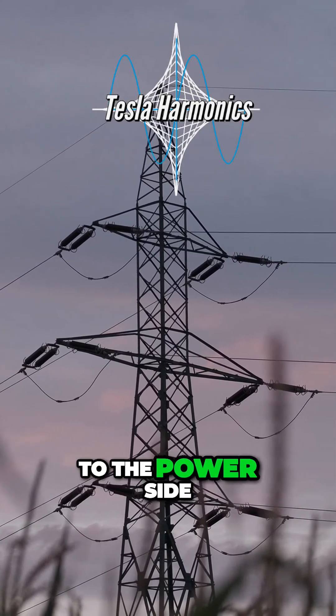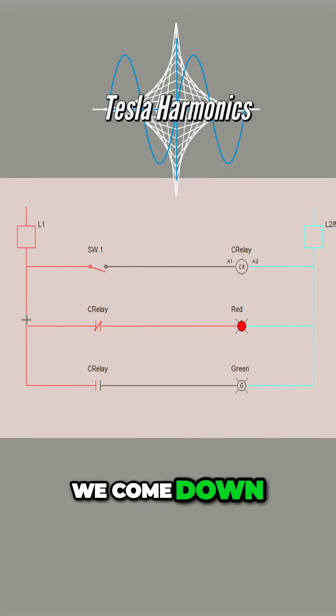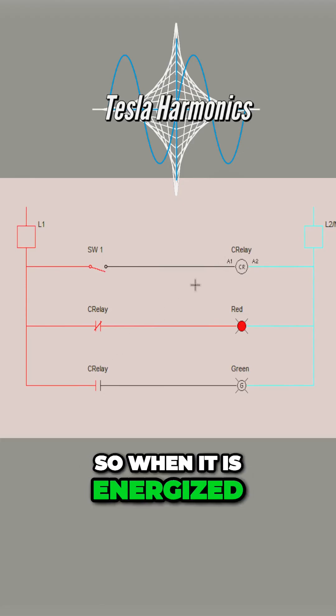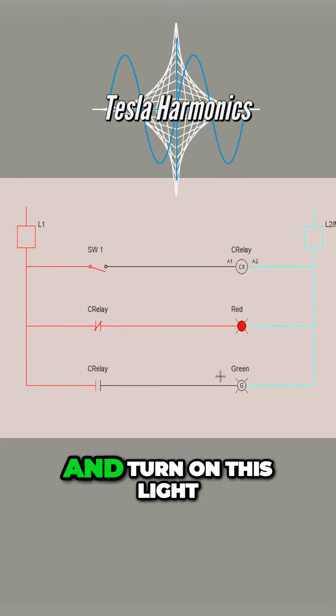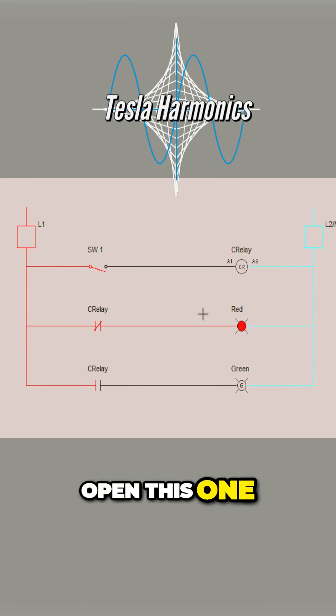We come back over here to the power side. We come down, we have also taken and put power on one side of a normally open contact that is on that control relay. So when it is energized, it's going to close this one and turn on this light, open this one and turn off that light.